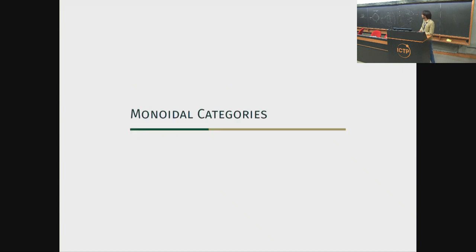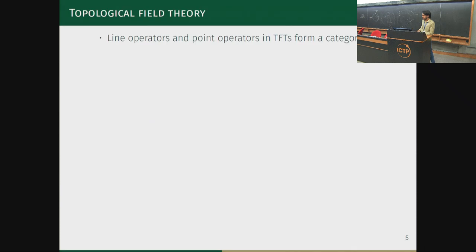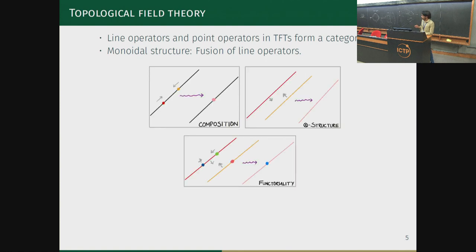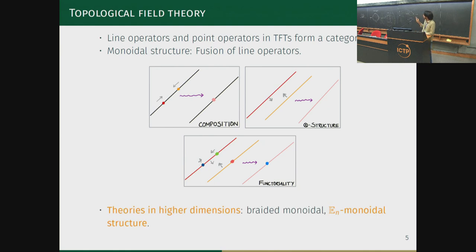Let me focus on the objects of interest: monoidal categories. In the context of topological field theory, line operators and point operators in TFTs form a category, and fusion of line operators gives the monoidal structure. The first diagram shows composition via fusion of point operators along lines; the tensor structure comes from fusing line operators, and compatibility gives functoriality. In higher-dimensional theories, taking line operators around each other gives a braided monoidal or E_n monoidal structure, nudging us into the world of non-commutative geometry.